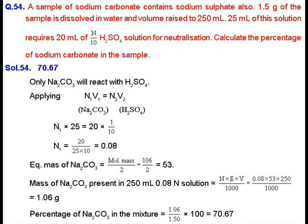We need to find out the mass of Na₂CO₃ in order to calculate the percentage. The mass of Na₂CO₃ present will be equal to normality multiplied by equivalent weight multiplied by volume divided by 1000. Substituting all the values as 0.08 multiplied by 53 multiplied by 250 divided by 1000.